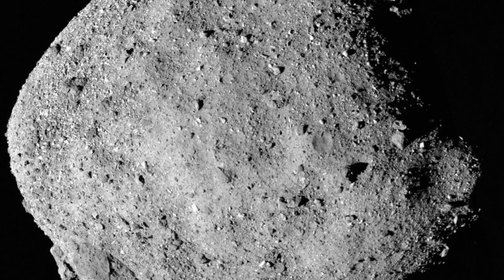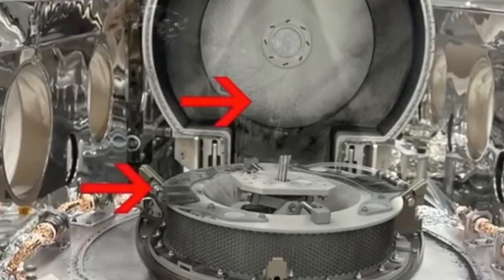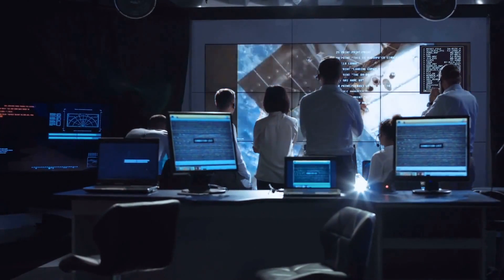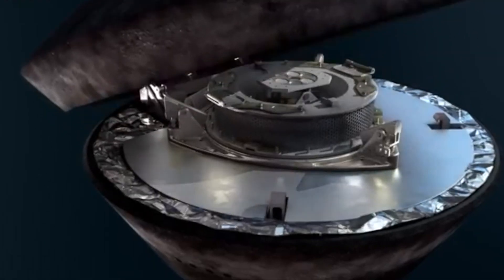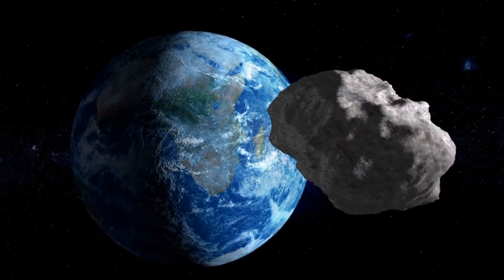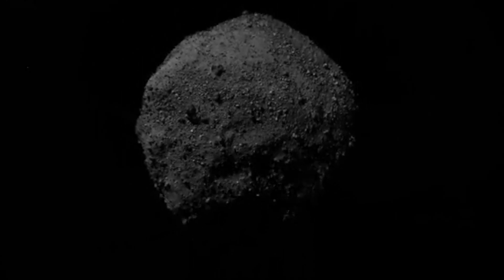The sample was encapsulated, but an issue arose as some material was escaping due to a jammed flap caused by larger rocks. To prevent further loss, NASA decided to forgo the scheduled measurement of the sample and sealed it for return. On May 10, 2021, OSIRIS-REx departed Bennu, embarking on its journey back to Earth.